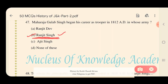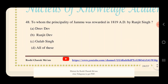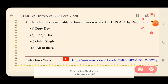Question 49: To whom was the principality of Jammu rewarded in 1819 AD by Ranjit Singh? Options: A) Dhruv Dev, B) Ranjit Dev, C) Gulab Singh, D) All of the above. The answer is C — Gulab Singh. Ranjit Singh gave the principality of Jammu to Gulab Singh as a reward in 1819.